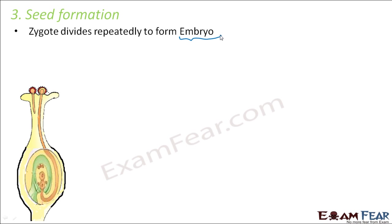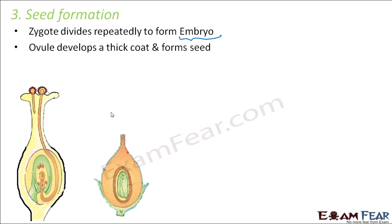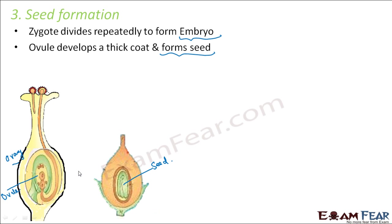But what happens to the other parts of the flower after fertilization? The ovule develops a thick coat and forms the seed — the ovule is the internal structure inside the ovary. The entire ovary then ripens to form the fruit. That is why first comes the flower, the flower undergoes reproduction, and then the flower gives rise to the fruit.